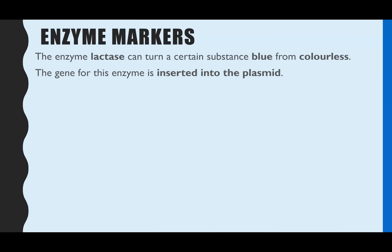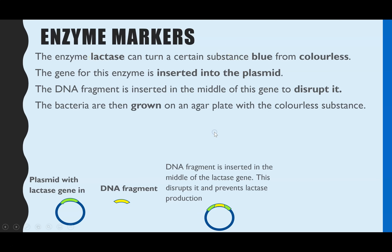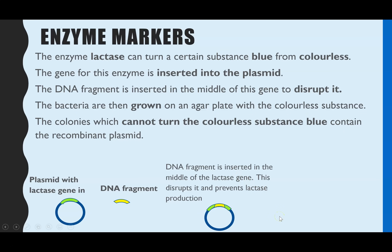The last example is enzyme markers, using the enzyme lactase. Lactase can turn a certain substance blue in colour from its original colourless solution. That gene for lactase is inserted into the plasmid, and then the DNA fragment of interest is inserted right in the middle of that lactase gene to disrupt it. Any bacteria grown on this colourless substance that have the recombinant plasmid will not be able to produce lactase to turn the substance blue, so colonies that remain colourless contain the plasmid of interest.